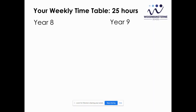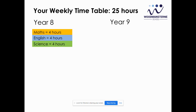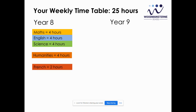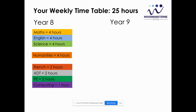In order to do that, we need to find some space on your timetable. You currently have 25 hours per week of lessons, made up of four hours of maths, English and science, together with four hours of humanities, two hours of French, ADT and PE, and then one hour each in computing, drama and music.